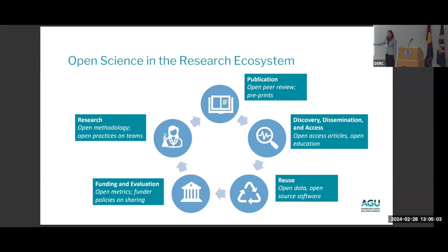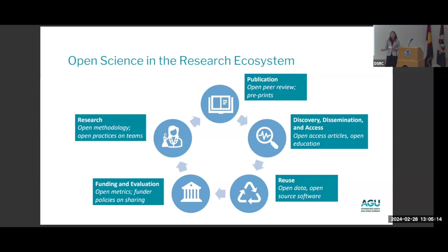One of my favorite parts of open science is the reuse component — how open science can benefit research and results in more discovery. When thinking about how to practice open science in your own work, you might think about open data and open software, two really key elements. If you're opening up your data, sharing it more widely, documenting it well — and similarly for your software — you're enhancing research because you're making sure nobody has to duplicate your effort, and that other people can build on your work.